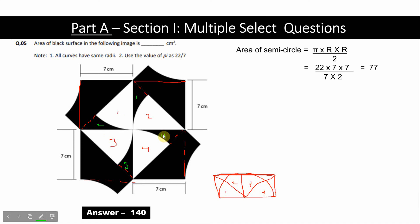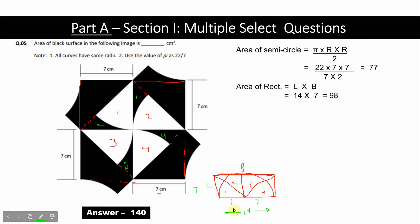The area of a semi-circle is pi times r squared by 2. The area of these 4 semi-circles is equal to 77. Now the area of the rectangle is length times breadth. Here the length is 7, and 7 plus 7 is 14, so 14 into 7 is 98, which is the area of the rectangle.